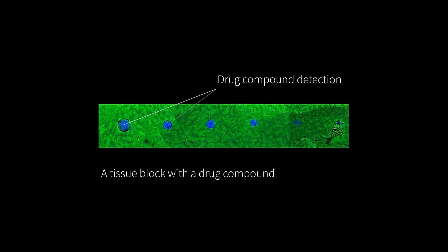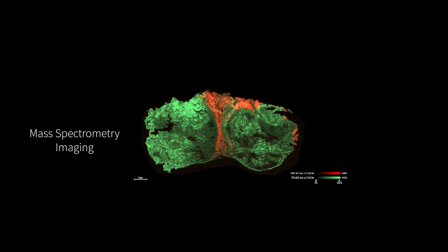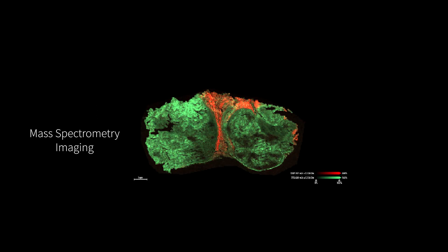MSI can also be used to look at biodistribution in any other ex vivo tissue — so not just brain tissue — to include things like organoids and human tissue, provided it's not embedded in paraffin. However, we can look at peptides and proteins if they are FFPE embedded.